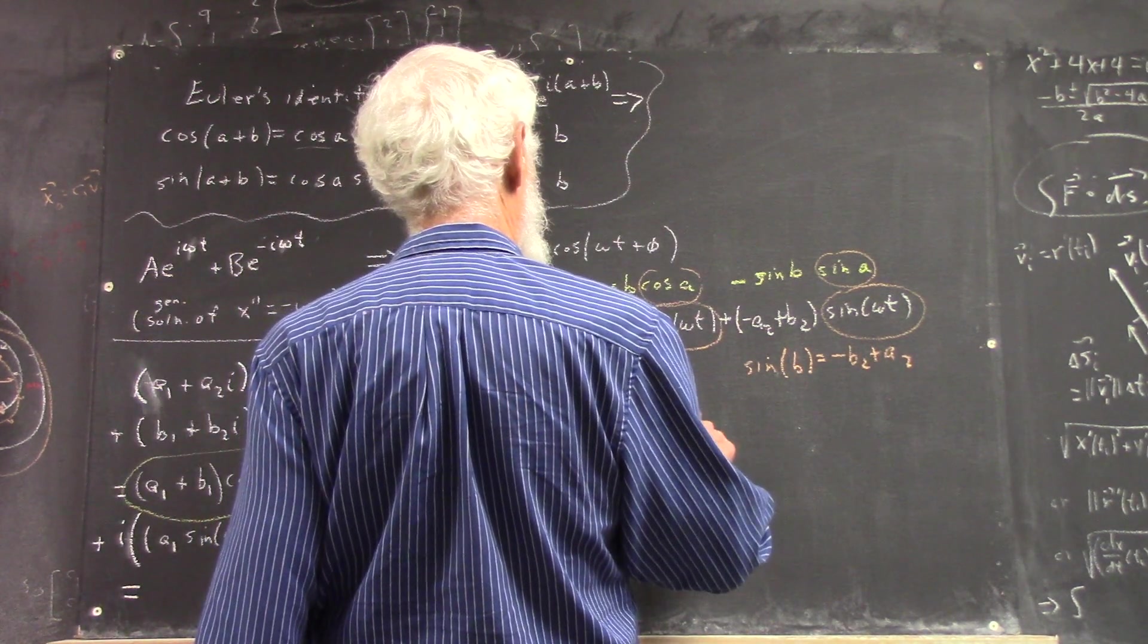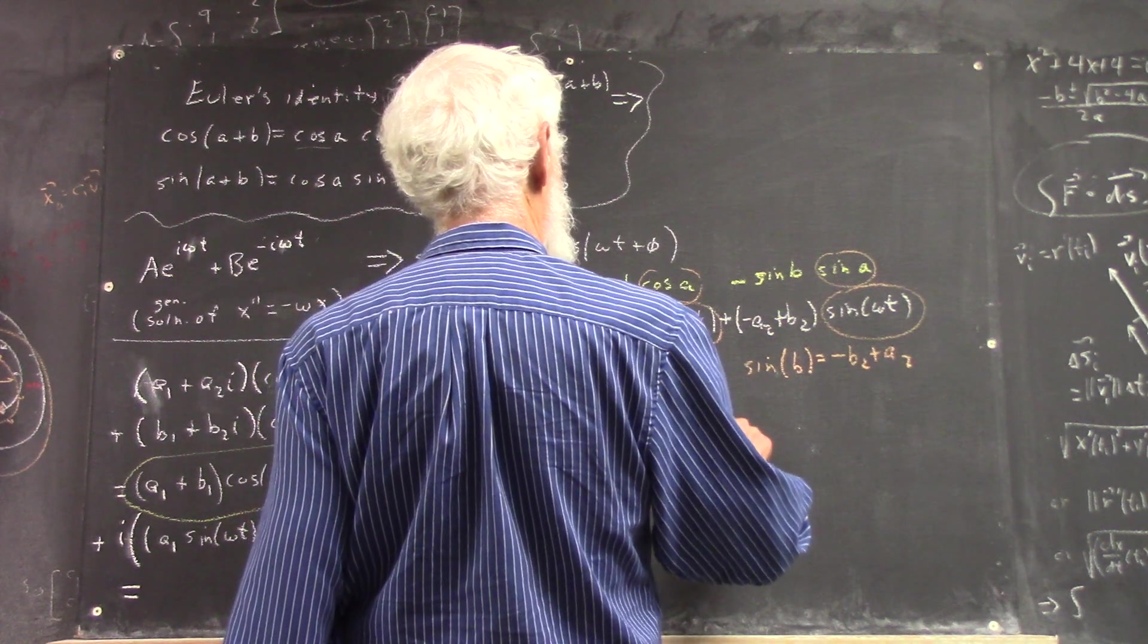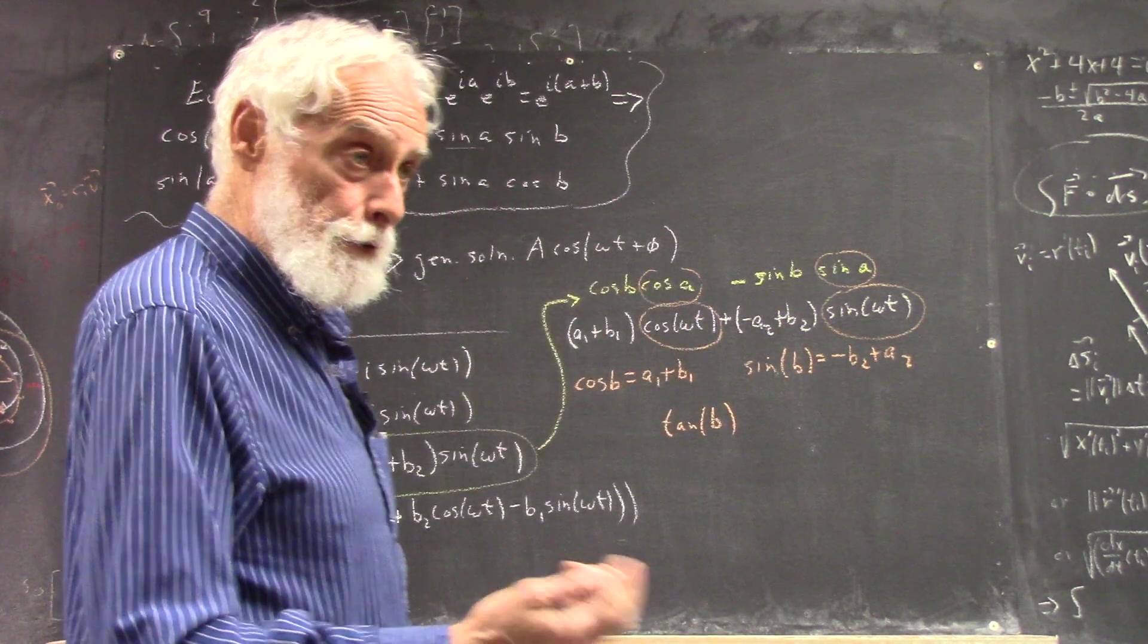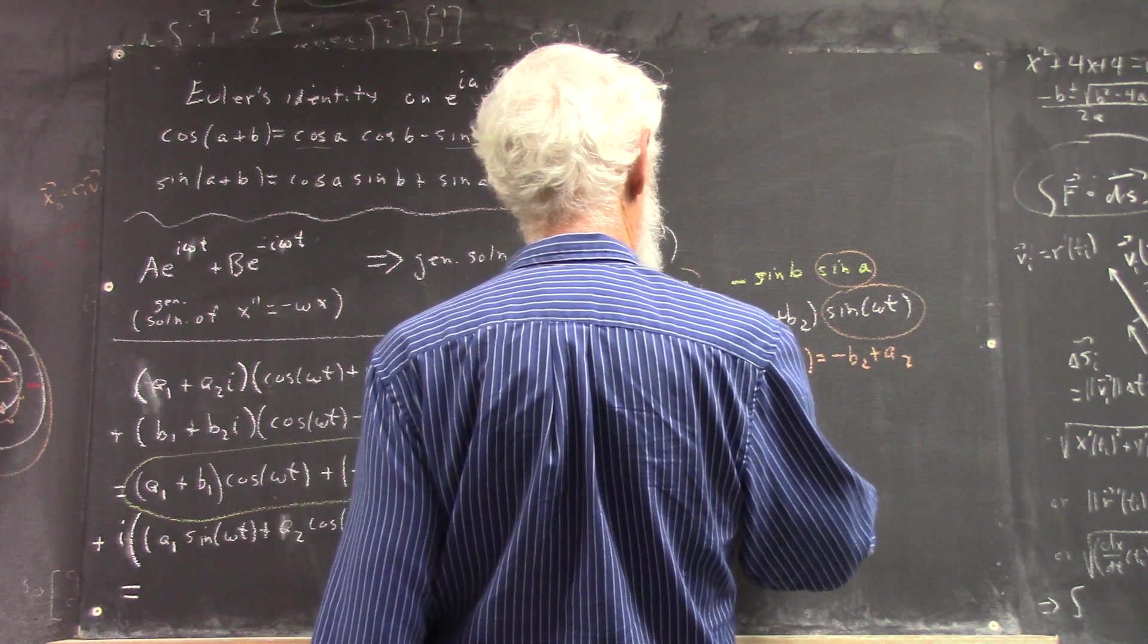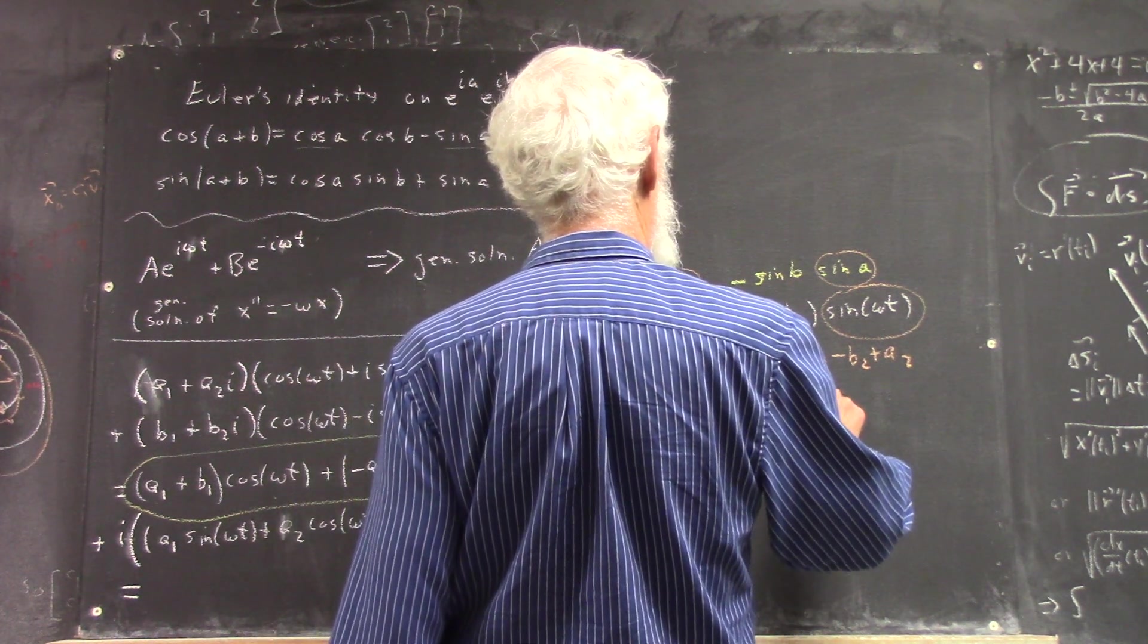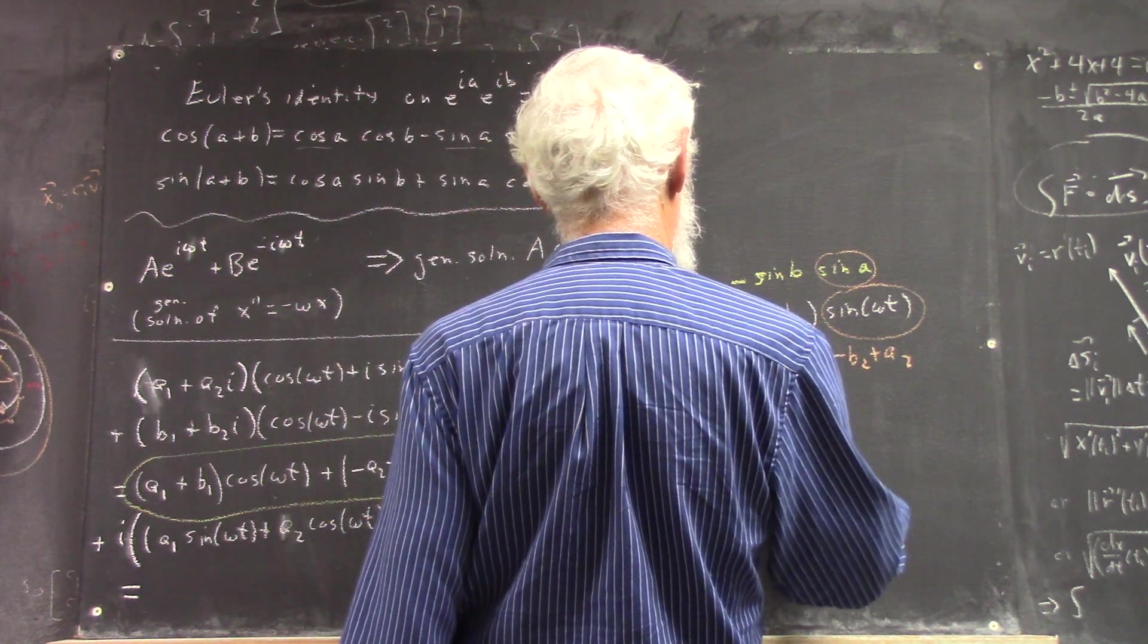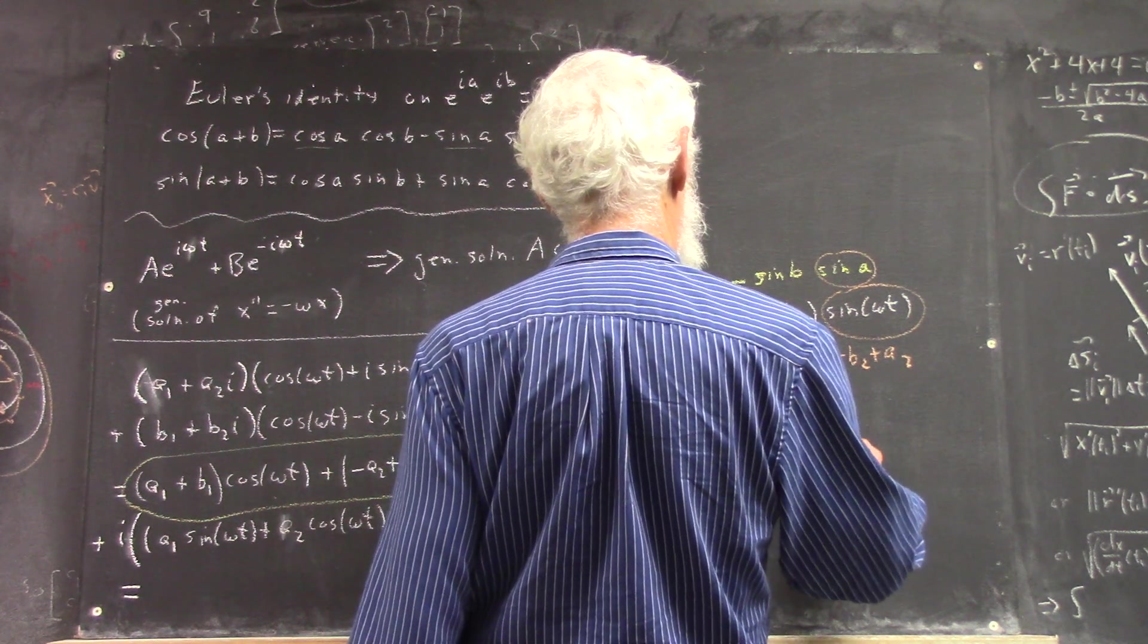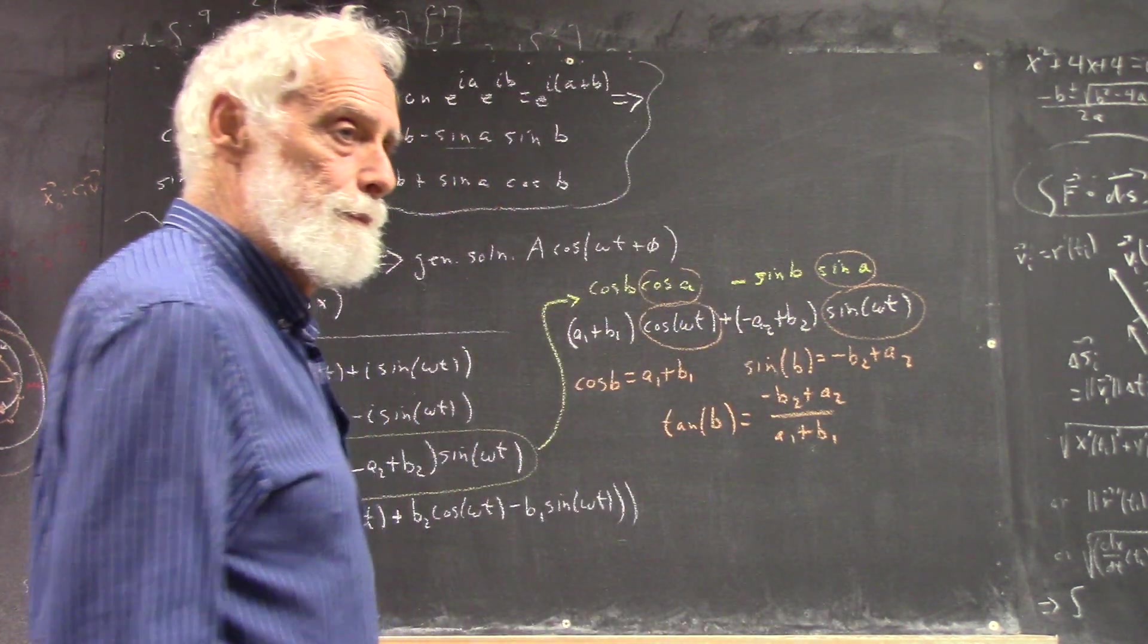what we can do is we can say that the tangent of v, and of course the tangent can be any real number, equals negative v2 plus a2 over a1 plus b1.